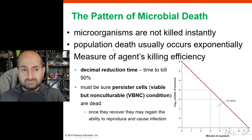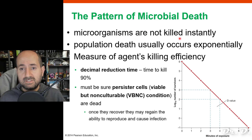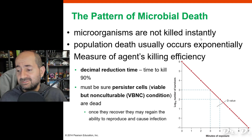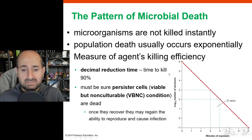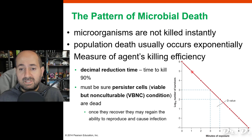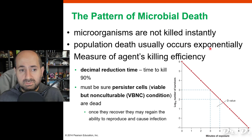When you add an agent to kill microorganisms, microorganisms are not killed instantly. If I spray a table with Lysol, 70% alcohol, or some other disinfectant, not all bacteria die instantaneously. There is a logarithmic death curve that happens. You can see this plotted out — the population numbers get decimated in a logarithmic way, and population death usually occurs exponentially.